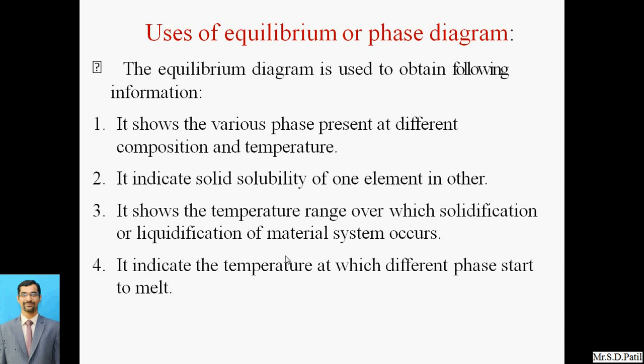Second, it indicates the solid solubility of one element in another — whatever the percentage of solubility of one element in another, the phase diagram indicates those terms. Third, it shows the temperature range over which solidification or liquefication of a material system occurs — giving the temperature ranges where the material is in a liquid or solid state. For example, for cast iron in liquid form versus solid form, these temperature ranges are obtained through phase diagrams.